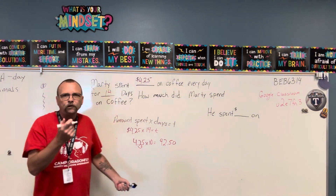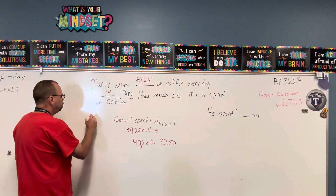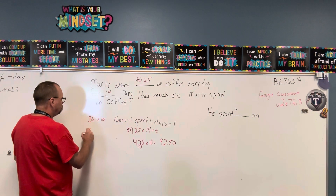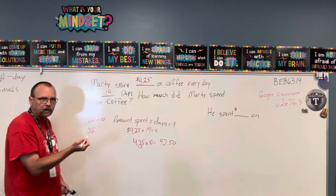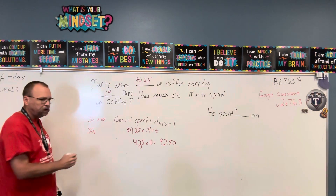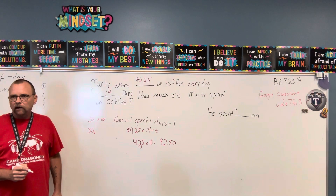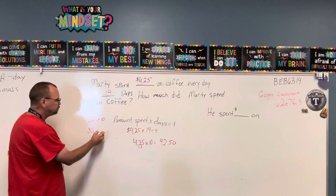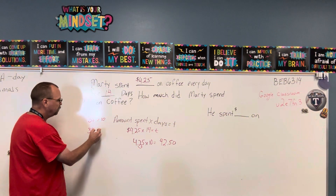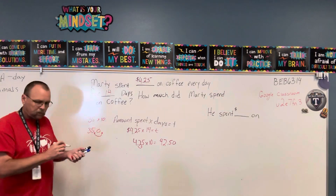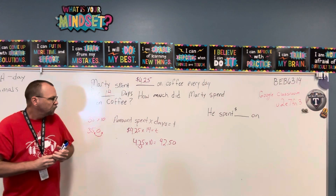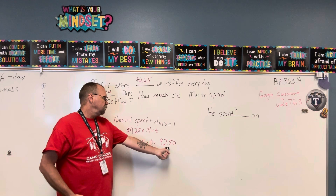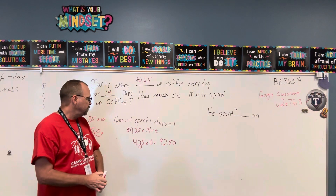Same thing when you're doing whole numbers. If you had thirty-five times ten, really what you're doing: thirty-five, my five is in the ones place, I'm putting my decimal there, and I'm making it ten times bigger. To do that, I've got to move my decimal point to the right one time. So four twenty-five times ten is forty-two dollars and fifty cents.